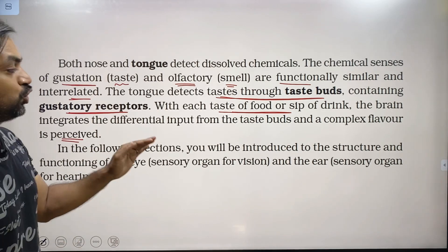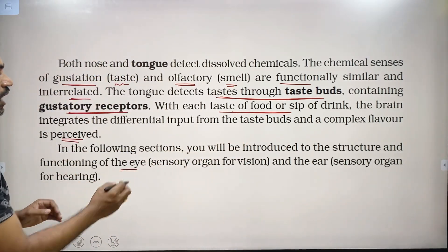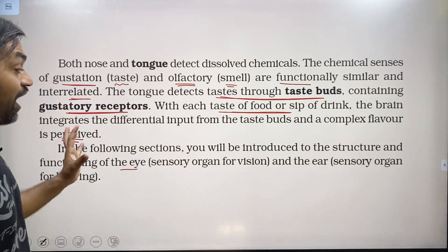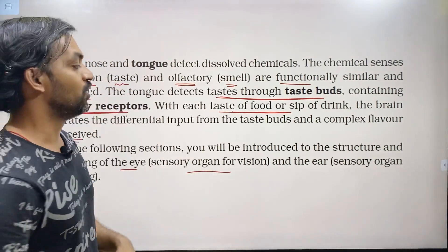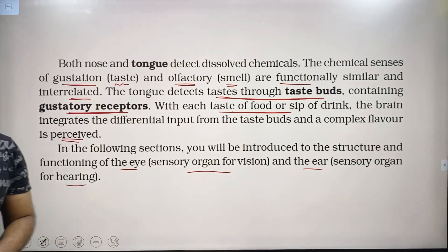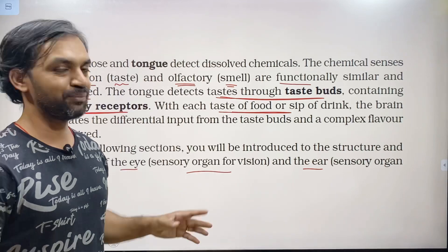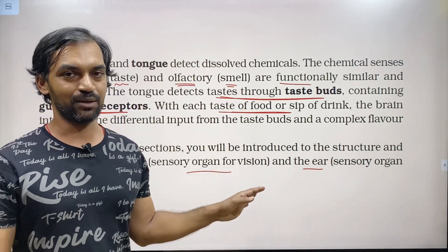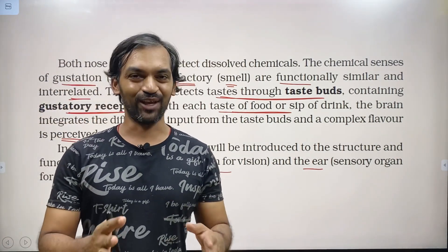In the following sections, you will be introduced to the structure and functioning of the eye — the sensory organ for vision — and the ear — the sensory organ for hearing. With this we complete this part. If you found this video helpful, please like, share, and comment. Subscribe to Biology Simplified because your support is our strength. Thank you.